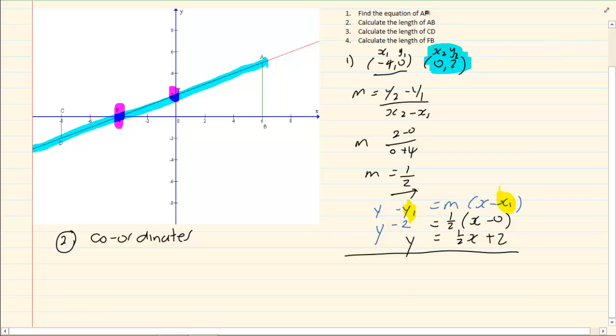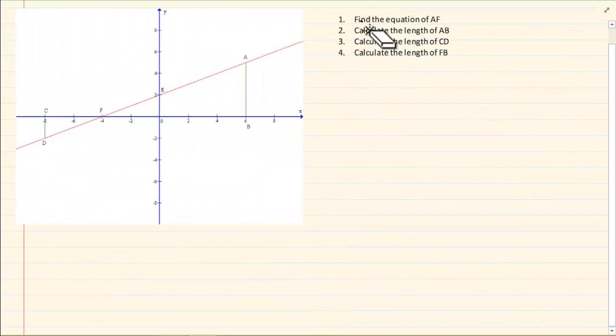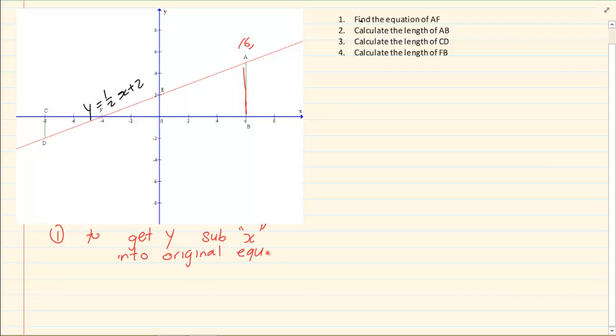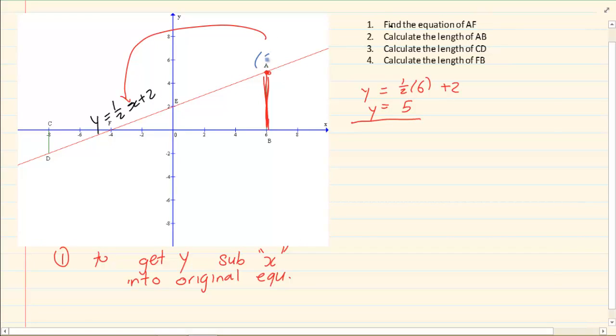Now remember you would get the same answer if you used (-4,0). Now the first question was find the equation of AF. Now calculate the length of AB. If I am saying y equals a half x plus 2 and then I have that at this point x is 6. Now we know to get y we have to substitute x into the original equation. That means at this point if I want the y value I need to substitute the 6 into this x. So I am going to have y equals a half into 6 plus 2 which is going to equal to 5. So my coordinates for A is (6,5).